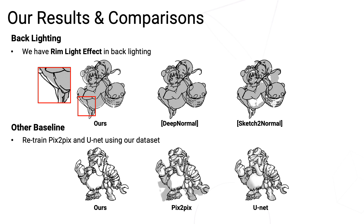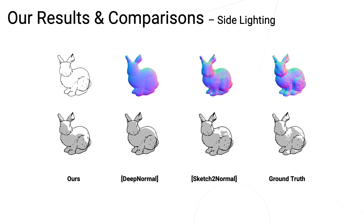We also compare with the baseline PIX2PIX and UNET trained on our dataset. We can see that the PIX2PIX architecture fails to reason the shadow, and UNET fails to generate binary shadows. Under the side lighting condition, we compare with a 3D test model ground truth. This demonstrates that Deep Normal has a back lighting appearance when it is actually side lighting, while our result is closest to the ground truth and learns the smooth shadow boundary from the hand-drawn dataset.